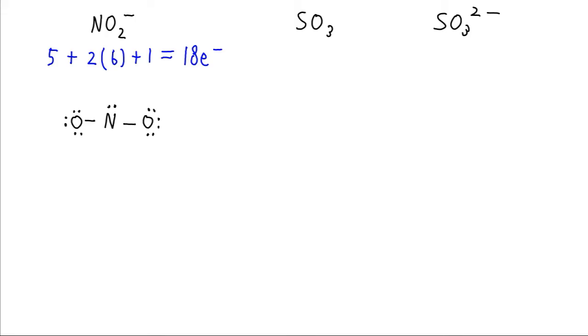What we're going to do is we're going to convert some of these electrons we've given exclusively to the oxygen into shared bonding electrons. That way, oxygen still gets the use of them, but nitrogen will too. Now everyone has an octet. We have a good Lewis structure.